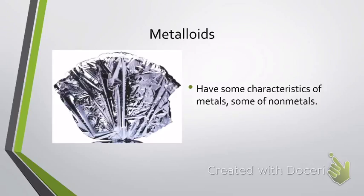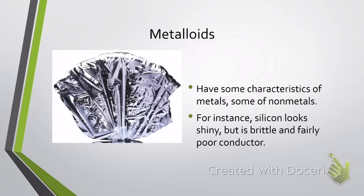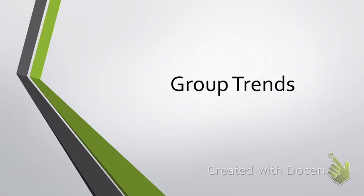Then we have metalloids. Metalloids can have some characteristics of metals and some of nonmetals. One of the most common metalloids is silicon — please note, it's silicon, not silicone. Silicon looks really shiny, but it's actually quite brittle, and it's a fairly poor conductor. That's the reason why it's called a semiconductor.